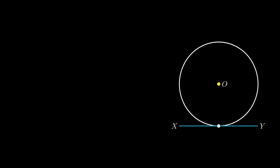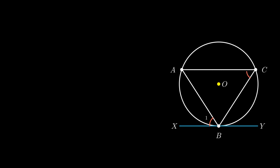To prove this, consider a circle with center O. Let XY be the tangent to the circle touching at point B. From point B, construct a chord AB making angle 1 with the tangent. Now consider any point C on the alternate segment, making angle 2 by joining C to points A and B respectively. We need to prove angle 1 equals angle 2.